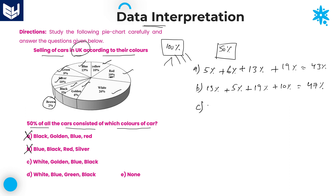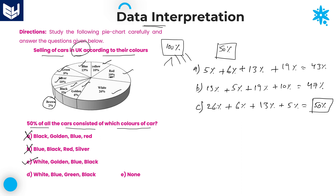Go for option C: white, golden, blue, and black. White is 26%, golden is 6%, blue is 13%, black is 5%. Adding: 26 + 6 = 32, 32 + 5 = 37, 37 + 13 = 50%. We got exactly 50%. Therefore, option C is the right answer for this question.